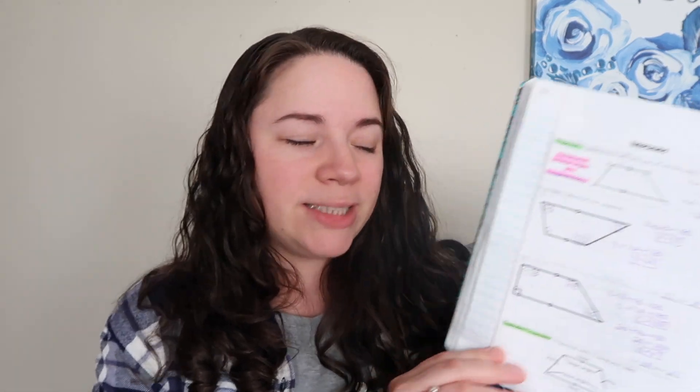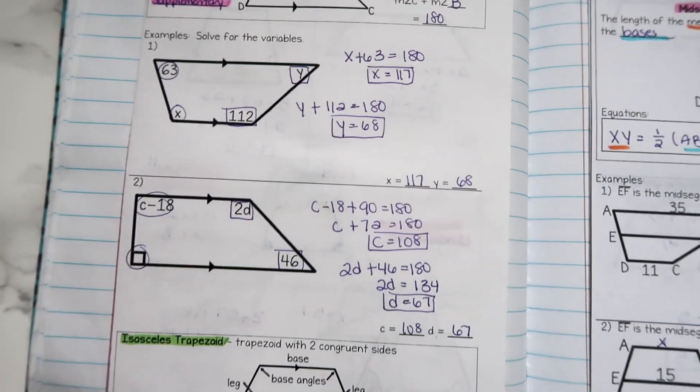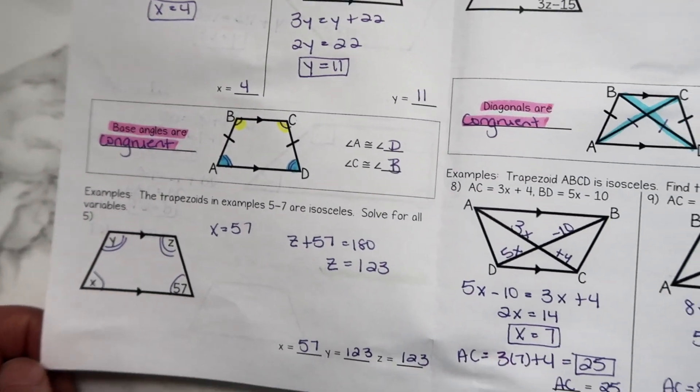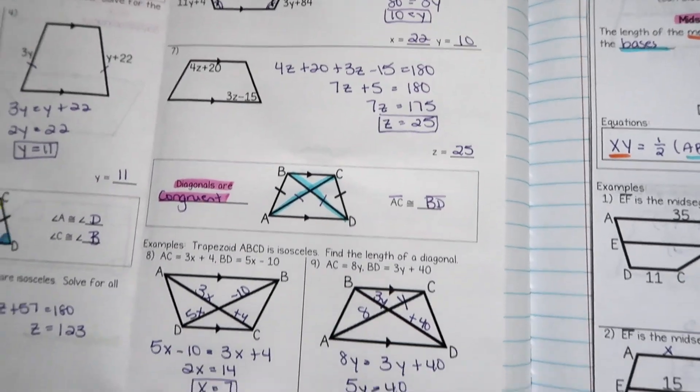Our next lesson is trapezoids, defined as a quadrilateral with one pair of parallel sides. There's a debate among geometry teachers about whether a trapezoid should allow one or more pairs of parallel sides — making a parallelogram a special trapezoid — but I keep them separate because it's confusing enough for students. I say a trapezoid has only one pair of parallel sides. We have two examples, then go into isosceles trapezoids: legs being congruent, base angles, and diagonals being congruent.